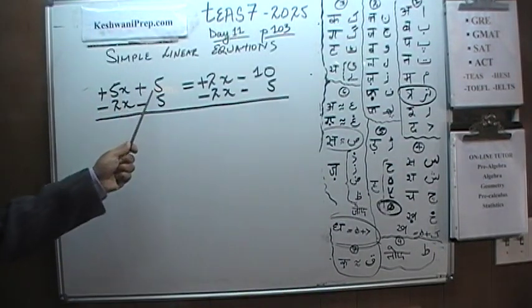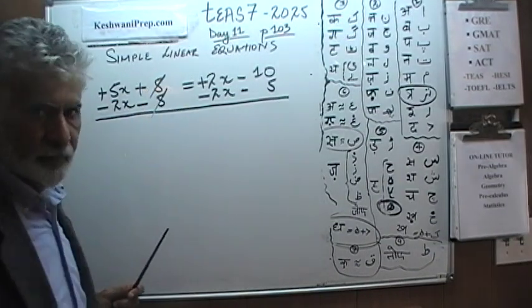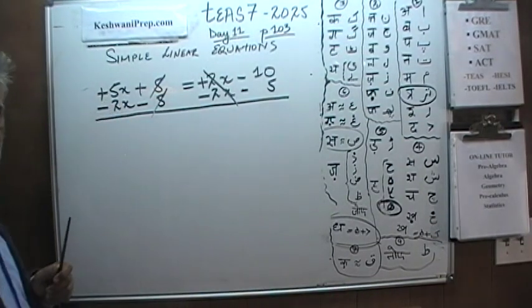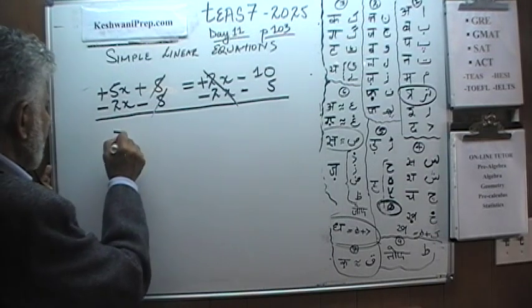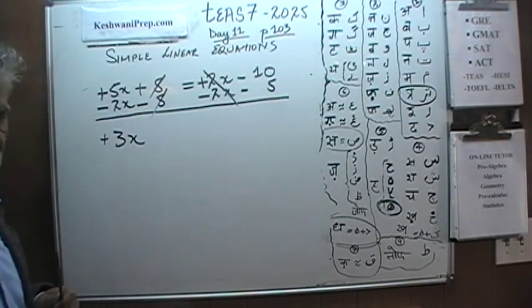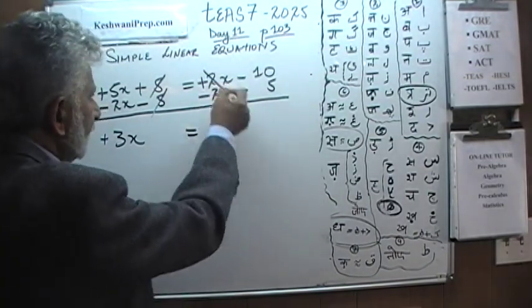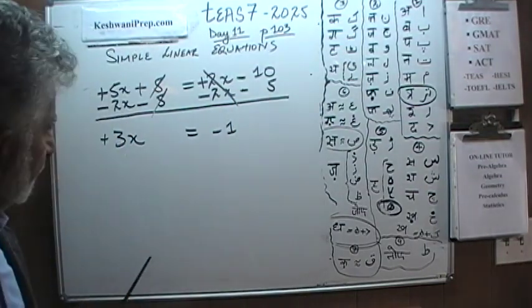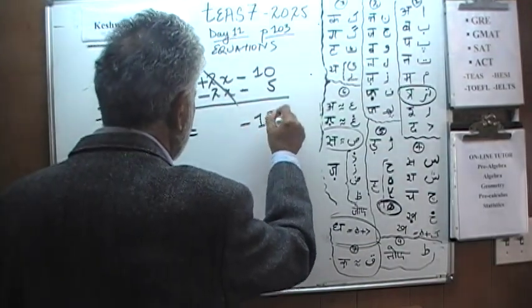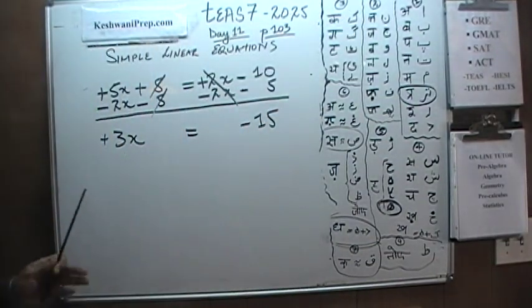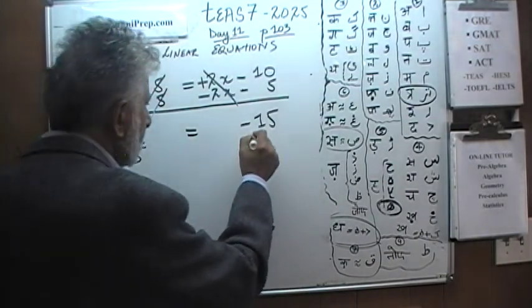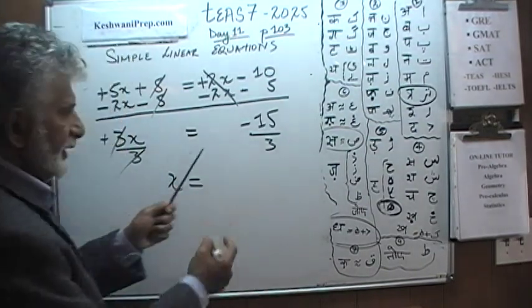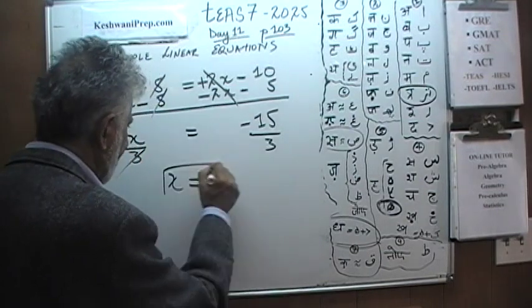So there we go. We have a positive 5 and a negative 5. They're going to kill each other. Similarly, we have a positive 2x and negative 2x. 5 minus 2 is 3. So we are left with 3x. The equal sign comes down. This thing goes away. Here we have a negative 10 and negative 5. That gives us negative 15. We want the x by itself, so divide both sides by 3. 3 is going to drop out. Finally, x is equal to negative 15 divided by 3, which is negative 5.